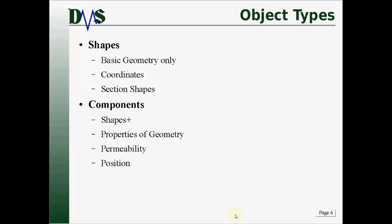So what are shapes, components, and parts? Starting at the most basic level: a shape is basic geometry only. We're talking about the actual section shapes — the physical structure of whatever your object is. That means x, y, z coordinates, and that's it. That's all that you have in a shape.